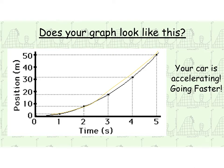In that previous example, we kept traveling longer distances — bigger y's — in the same x direction, so basically our slope was increasing. This graph definitely captures that: we weren't moving very far, then weren't moving very far, and then moving much further.